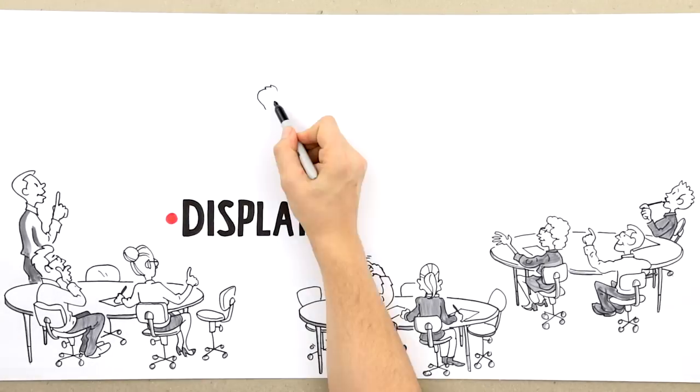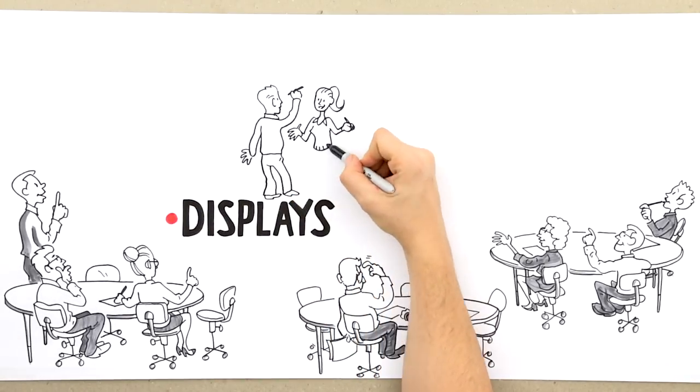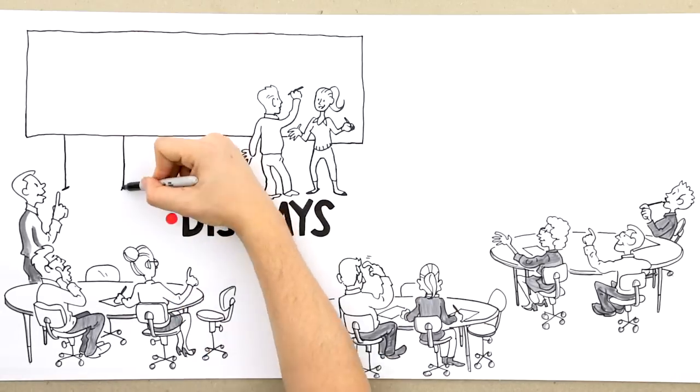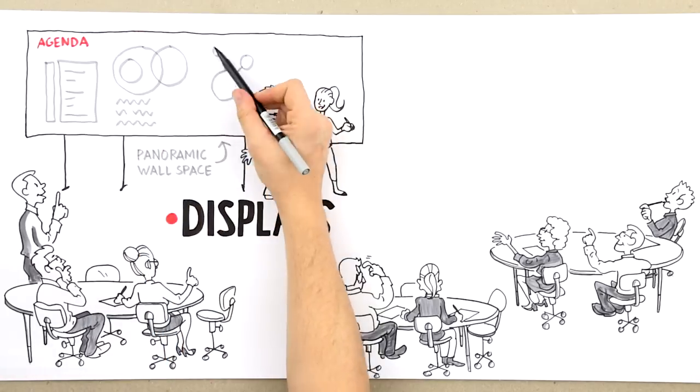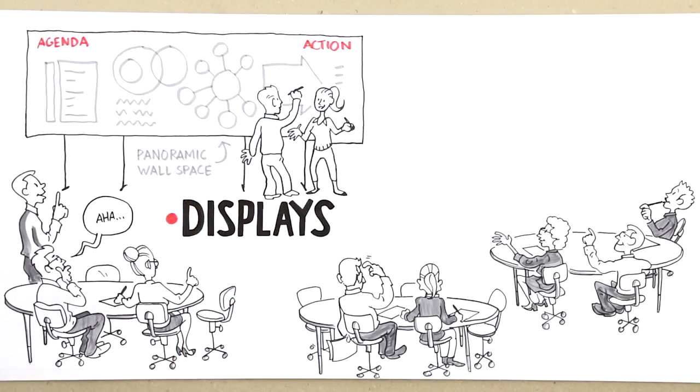Displays. Don't let the location dictate your setup. You need wall space. Lots of it. So you and your team can work panoramically, creating for example shared agendas, mind maps and action plans.